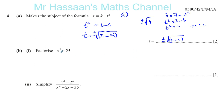Now, factorize x squared minus 25. When you have only two terms with a minus sign between them - x squared minus 25 - you notice a few things to check. First, are they perfect squares? Is x squared a square term? Yes, it is. Any term which has an even power is going to be a square term.